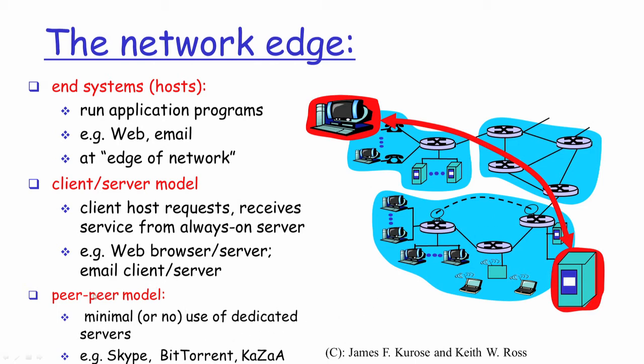On the other hand, in a peer-to-peer model, there is no specific machine classified as a server and another as a client. On a need basis, any system on the network can start acting as a server while another acts as a client. An example of this is Skype.